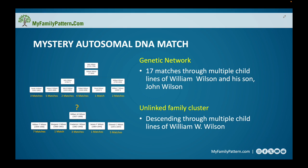This unlinked family cluster — this unknown family that looked for certain to be part of mine but I couldn't figure out how — had a lot of DNA matches from multiple children descending from a William W. Wilson. There were a total of 17 matches descending through different child lines. I knew there had to be a connection, but autosomal DNA wasn't giving me enough, and it didn't help me point toward records outside of DNA to figure this out.